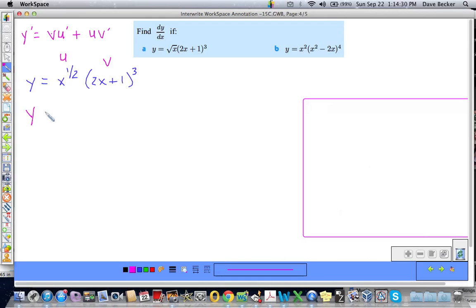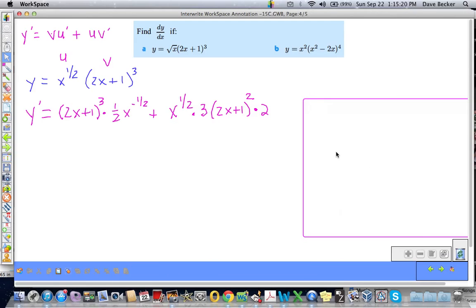So, dy dx is equal to the function v. So, that's 2x plus 1 cubed du. So, that would be times 1-half x to the negative 1-half plus u. The function u is x to the 1-half dv. And look at v here. Careful. We got chain rule action here. So, that would be times 3 times 2x plus 1 squared. So, derivative of the outside times the derivative of the inside times 2. And I don't like to simplify these things unless I have to. Now, if I had to evaluate it, I would.